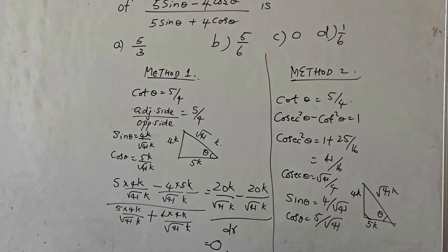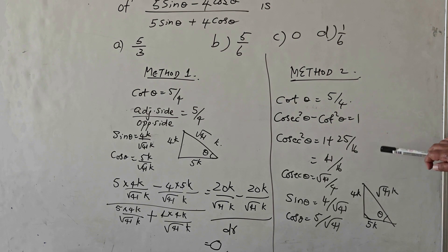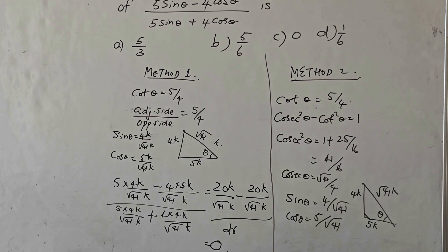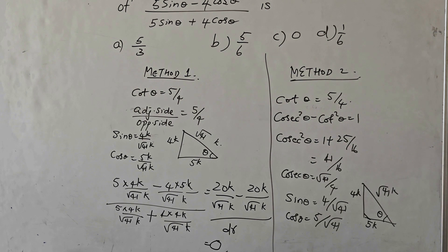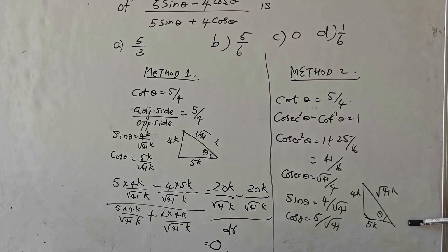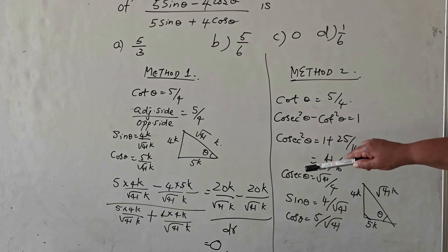In the second method I used the identity cosec²θ − cot²θ = 1. Since I know cot²θ, I found cosec²θ = 41/16, giving cosec θ = √41/4 (taking only the positive value since all terms are in the first quadrant). Taking the reciprocal gives sin θ = 4/√41, and by drawing the triangle cos θ = 5/√41. Substituting these values gives the final answer of 0.